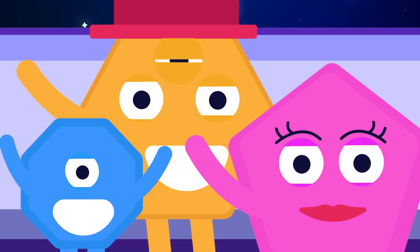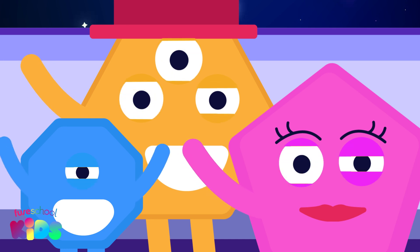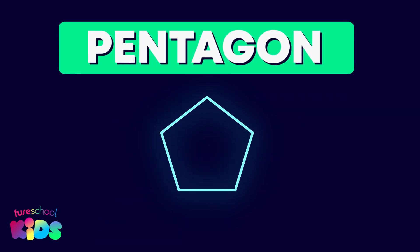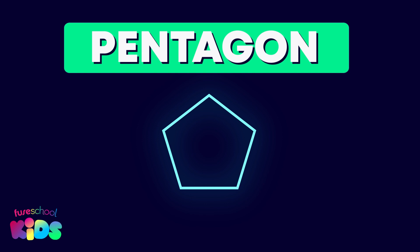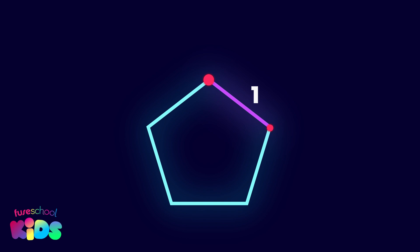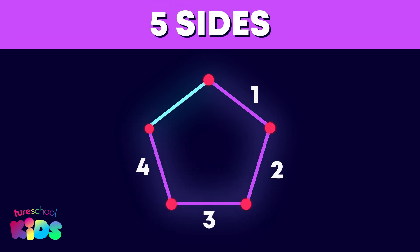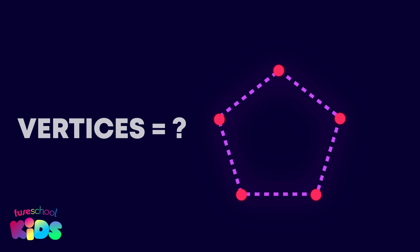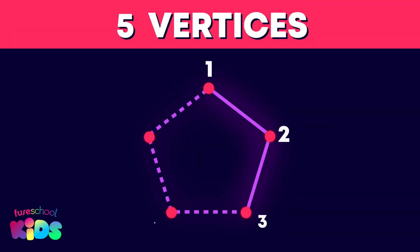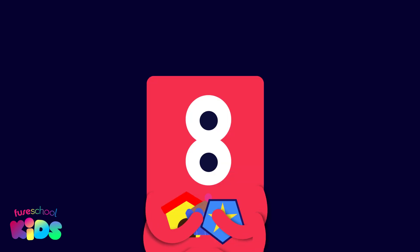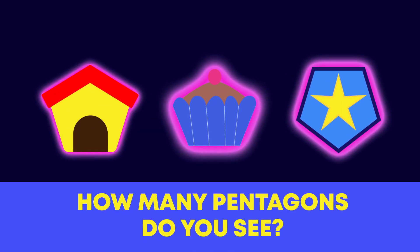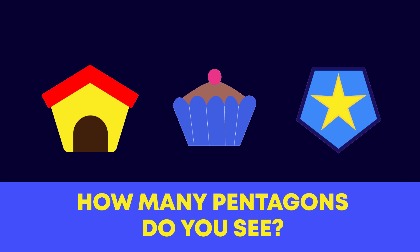Look everyone, the shape aliens made some new friends. Let's go say hello. This is pentagon poly. Repeat after me: pentagon. A pentagon is a 5-sided polygon with 5 sides and 5 vertices. The shape aliens collected things that have a pentagon shape. Are all of these pentagons? Yes, they are — all of these have 5 sides. Well done.